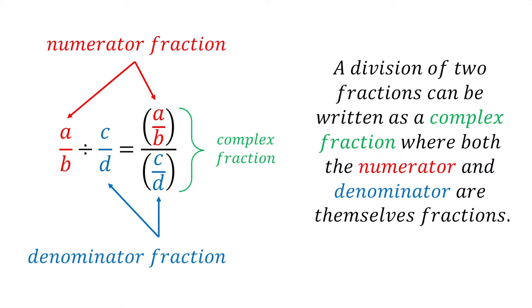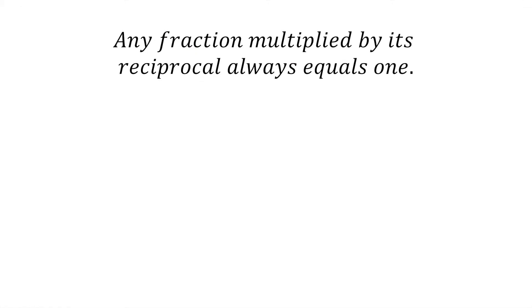That is, a fraction where the numerator and the denominator are both fractions. So A divided by B divided by C divided by D can be written as a complex fraction where A divided by B is the numerator and C divided by D is the denominator. The second fraction rule we need to know is any fraction multiplied by its reciprocal always equals 1.